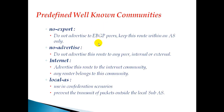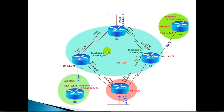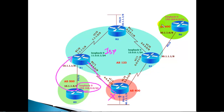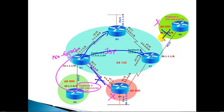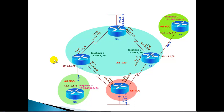These are well-known predefined attributes because their behavior is already defined - we just use them. A practical scenario: consider a service provider router receiving a specific network that needs to be advertised to the service provider but should not get advertised to any other customers. By adding the no export attribute, it will be advertised to all routers inside the same AS but not advertised to any external autonomous systems.